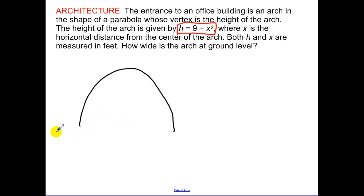h is my distance up from the ground. The center of the arch is right there. So x is standing for that distance from the center of the arch over. From the center of our arch over. How wide is the arch at ground level? So I've kind of drawn the ground level for us.